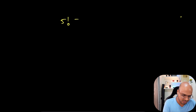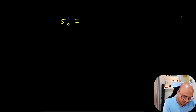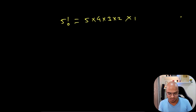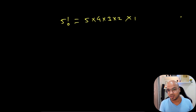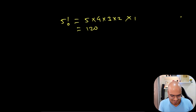So first of all, how do you find a factorial? Let's say I want to find the factorial of 5. We use an exclamation mark as the symbol. To find factorial of 5, you do 5 × 4 × 3 × 2 × 1 — that's the formula — and once you solve this you get the answer, which is 120.